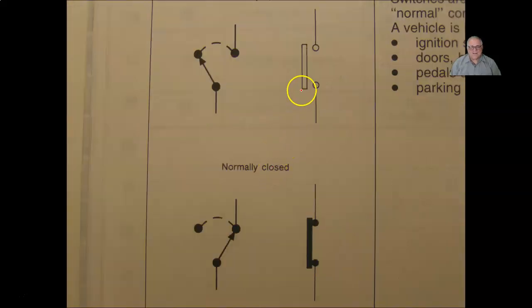Nissan also, and I really like this, especially when you get a diagram that's really small. If it is a normally open switch, they have it outlined instead of filled in. If it's normally closed, it's darkened in all the way. This is another feature I like about the Nissan.